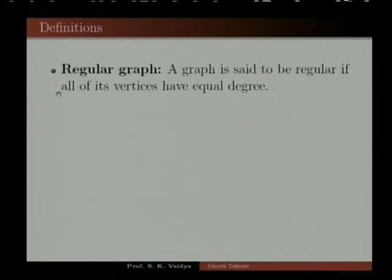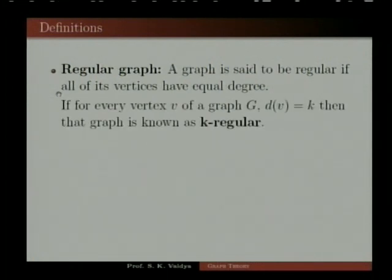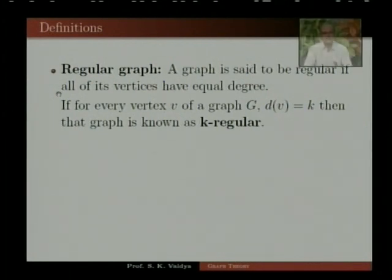Some special types of graphs. Regular graph: a graph is said to be regular if all of its vertices have equal degree. If for every vertex V of a graph G, the degree of V is K, then the graph is known as a K-regular graph.